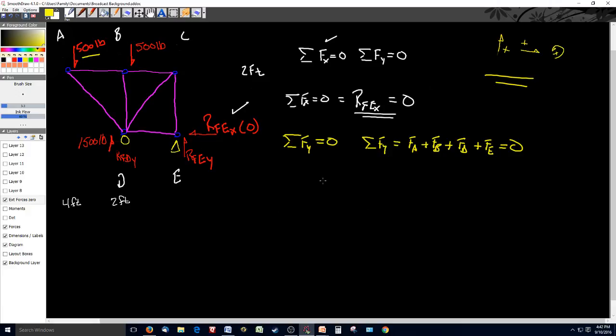So let's plug some numbers in. At A, I've got 500 pounds and it's going down, so this is minus 500 pounds plus the force at B, I've got another 500 pounds going down, minus 500 pounds, plus the force at D, which is 1500 pounds up, plus the reactionary force at E in the y component has to equal zero.